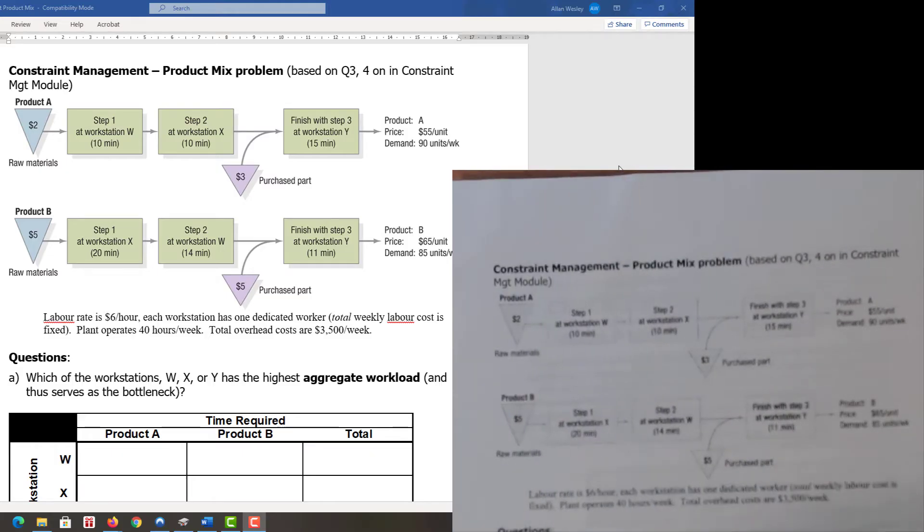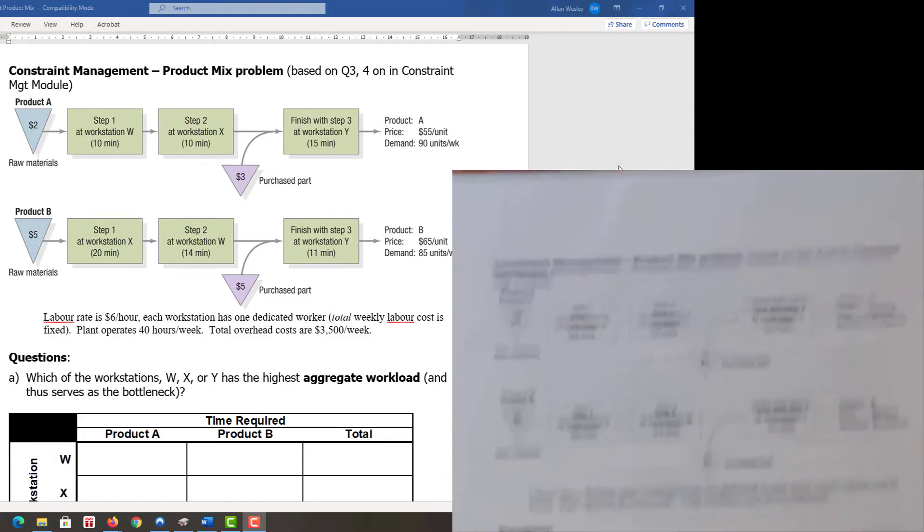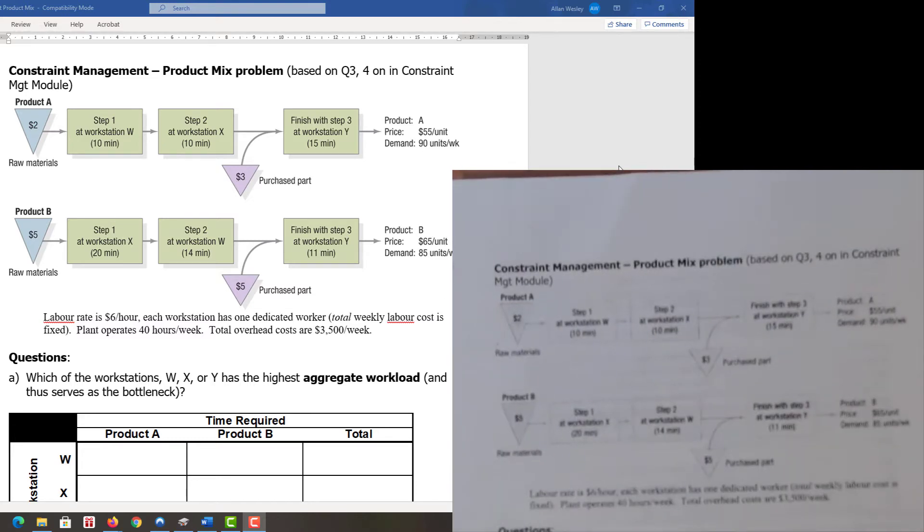For product A, we start with two dollars worth of raw materials. It goes to workstation W for 10 minutes, moves to workstation X for 10 minutes, then to workstation Y for 15 minutes, where we add a three dollar purchase part. Product A is priced at 55 dollars per unit with forecasted demand of 90 units per week.